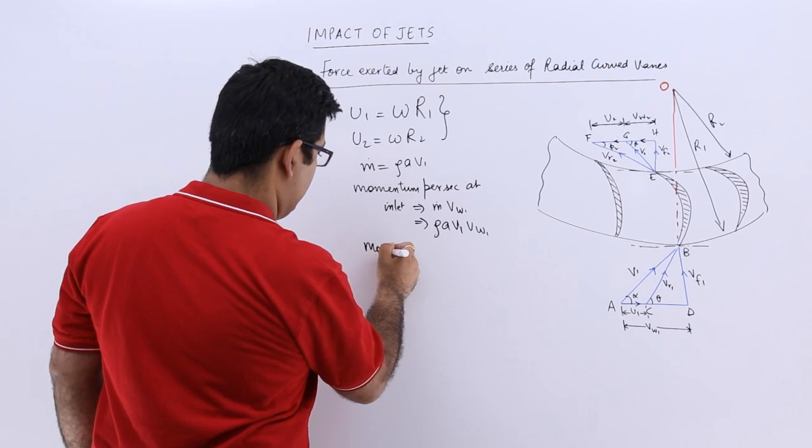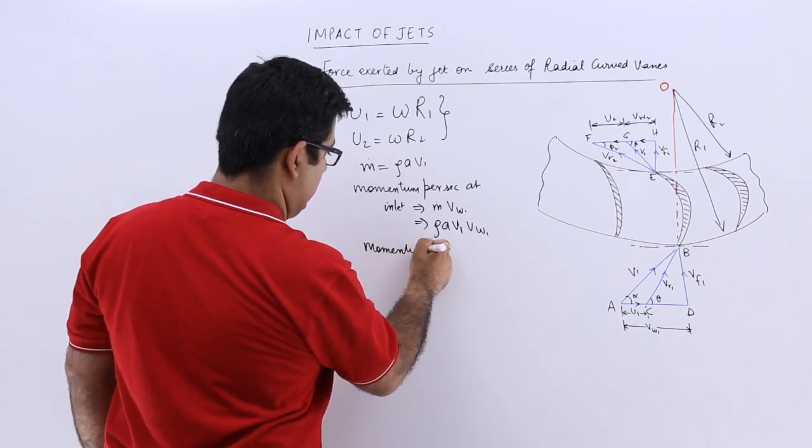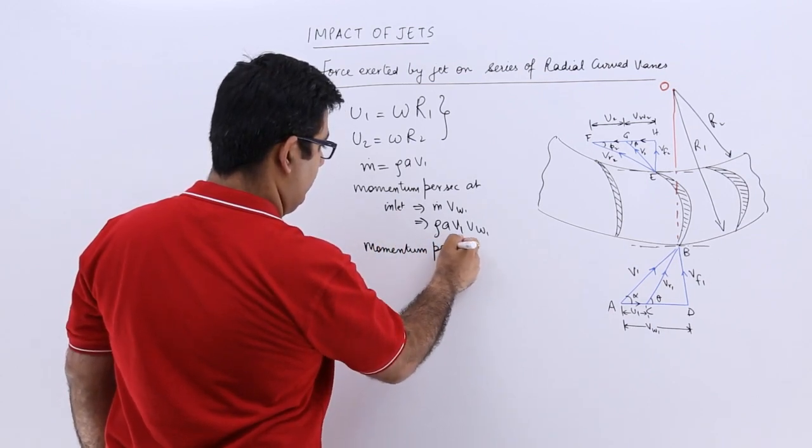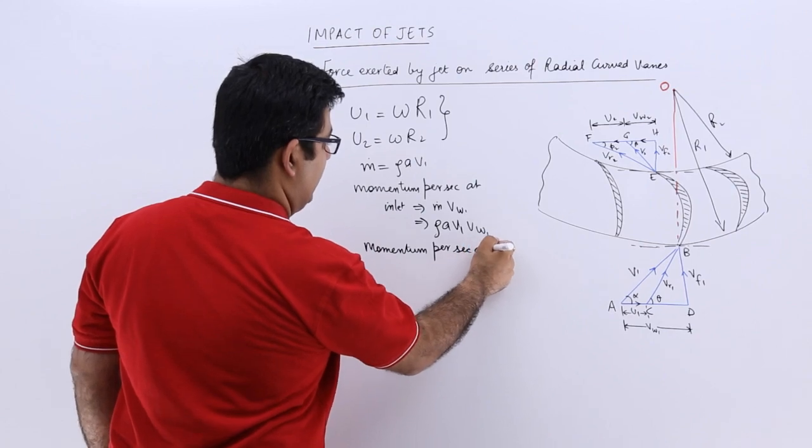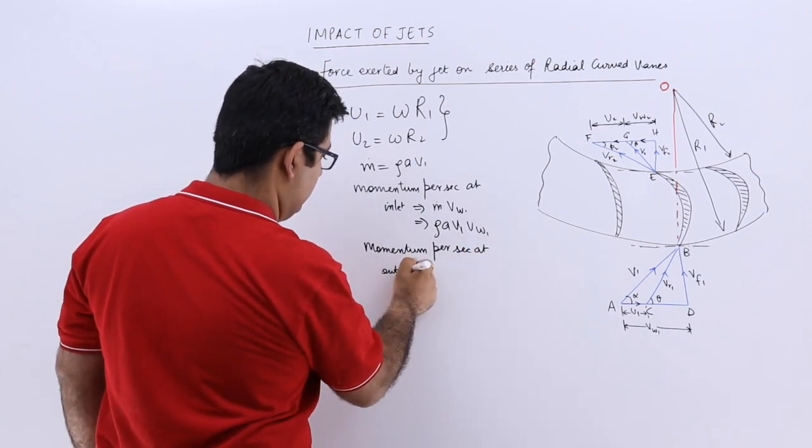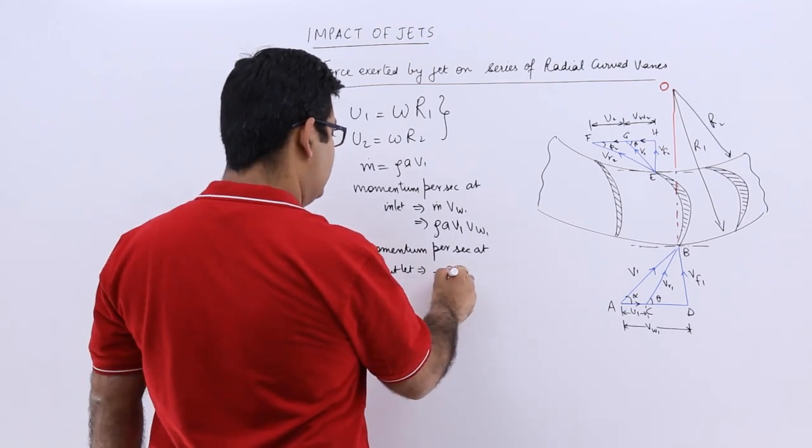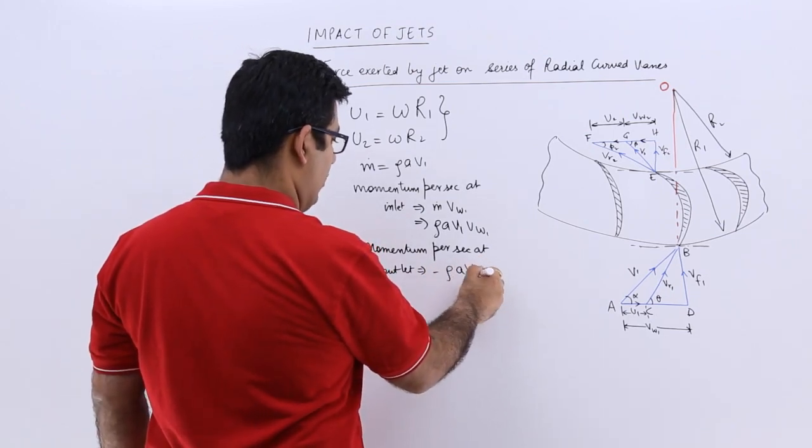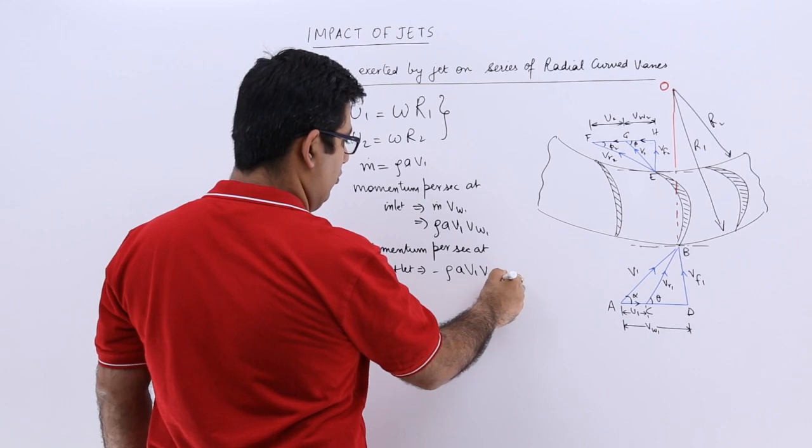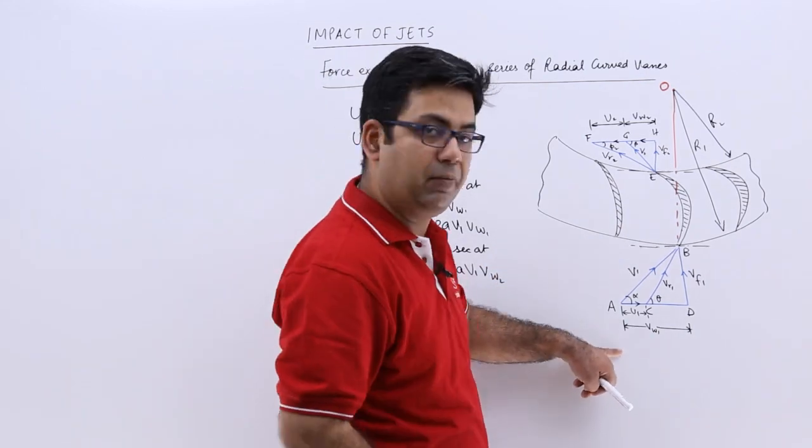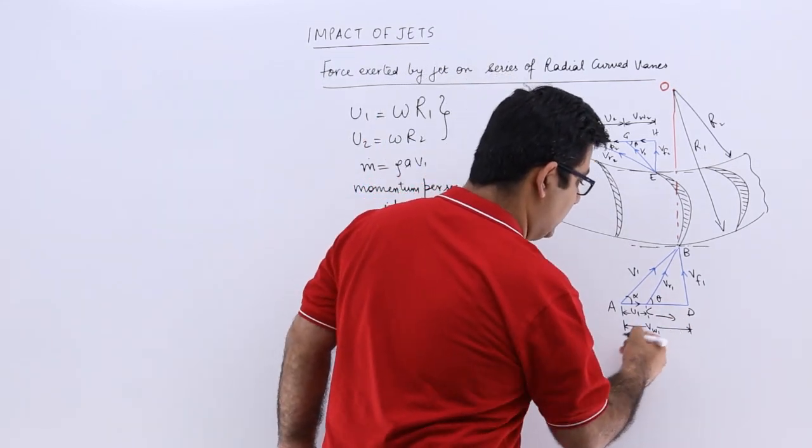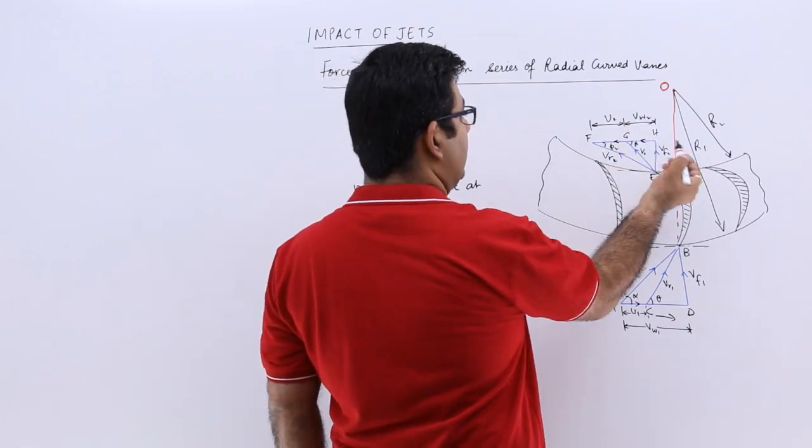Similarly, you can have momentum per second at outlet. That would be minus ρAv1 into vw2 because this vw1 is in this direction and this vw2 is in the opposite direction.